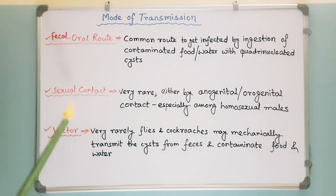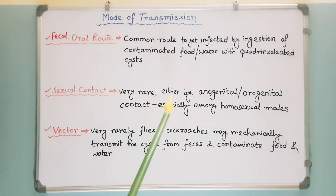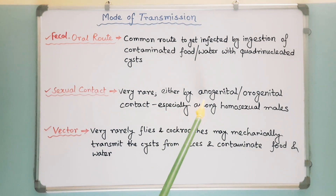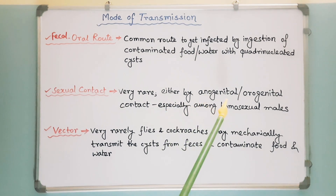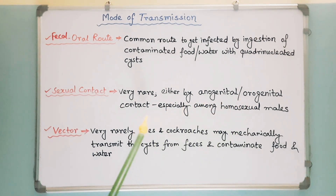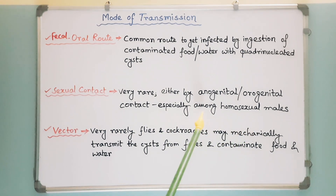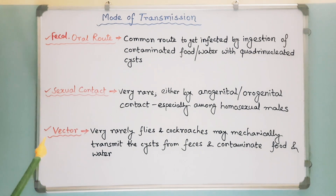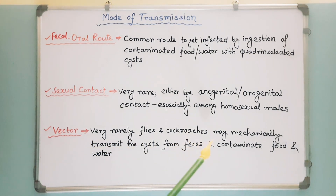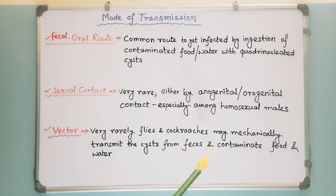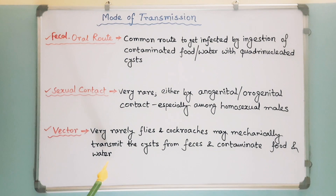Sexual contact is a very rare route. Infection may occur either by anogenital or orogenital contact, especially in developed countries among homosexual males. Very rarely, flies and cockroaches may mechanically transmit the cysts from feces and contaminate food and water.